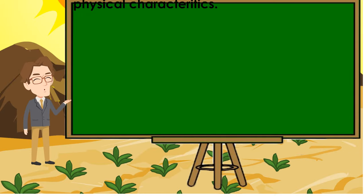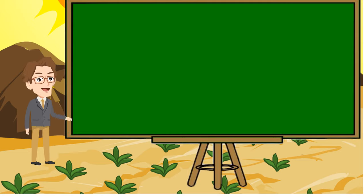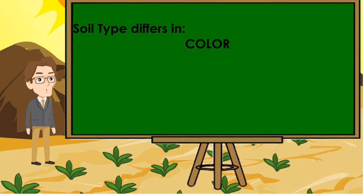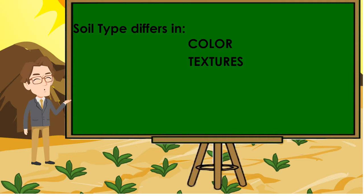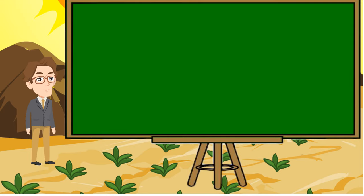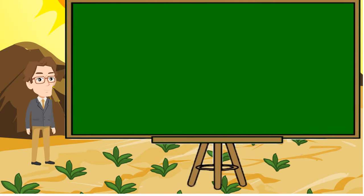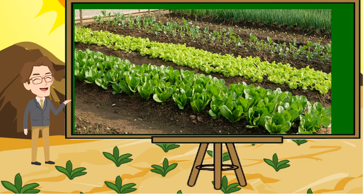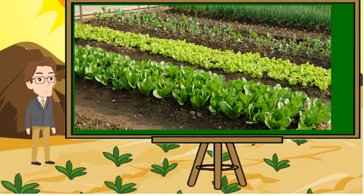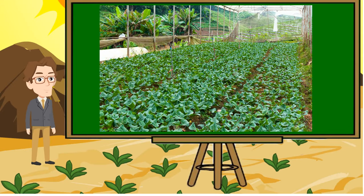Different types of soil have different physical characteristics. Each soil type differs in color, texture, odor and its ability to hold water. Some soils are good for planting while others are not. The presence of different kinds of vegetative plants in a place is evidence of good quality soil in the area or locality.